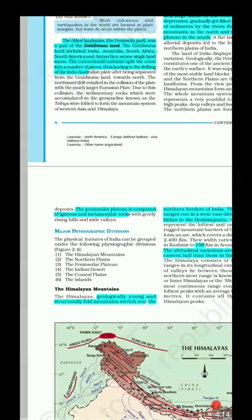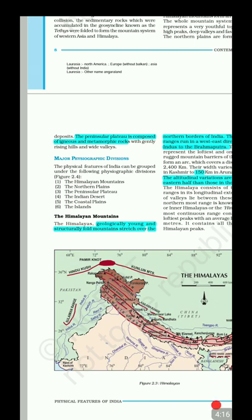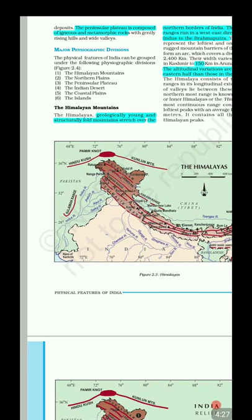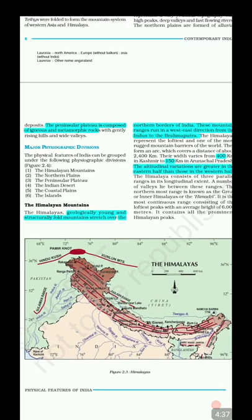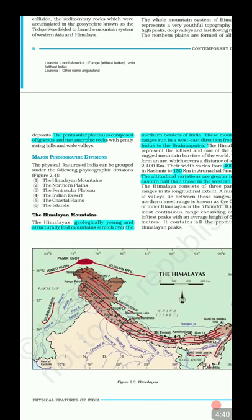The peninsular plateau is mainly composed of igneous and metamorphic rock. The major physiographic divisions are: the Himalayan mountains, the Northern Plains, the Peninsular Plateau, the Indian Desert, the coastal plain, and the islands. The Himalayan mountains are geologically young and structurally fold mountains, meaning they were formed because of folding.